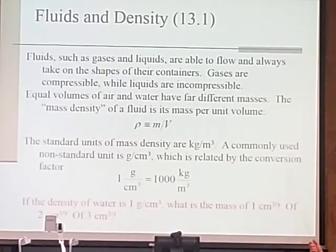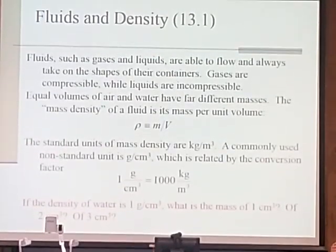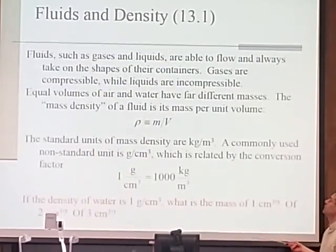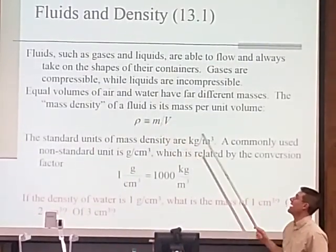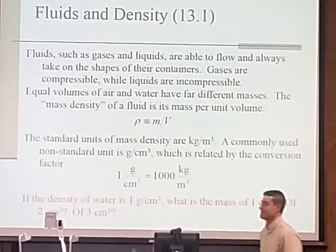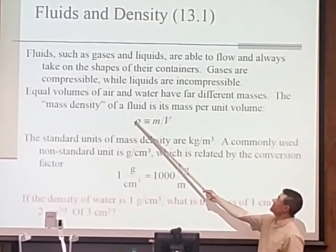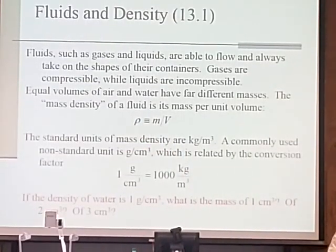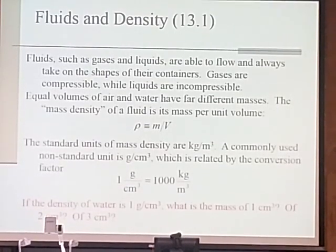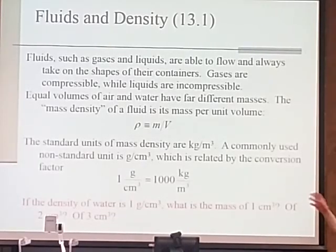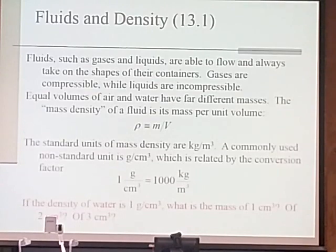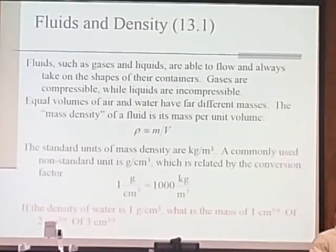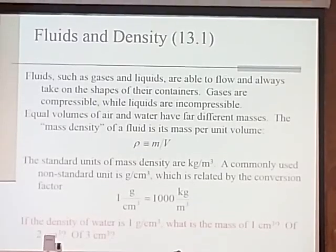What would be the mass of two cubic centimeters of water? Well, if we have twice the volume, are we going to have twice the mass or one half the mass? Twice. If we solve for mass, it's going to be rho times V, so mass and volume are directly proportional. That means if you keep the density constant and double the volume, you double the mass. So two cubic centimeters of water would have a mass of two grams, three cubic centimeters would have three grams, and so on. That's what we mean by mass per unit volume.